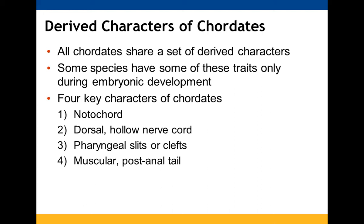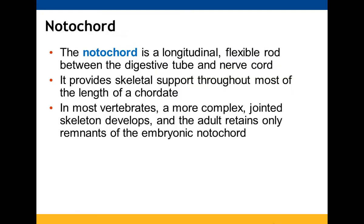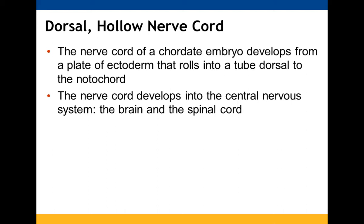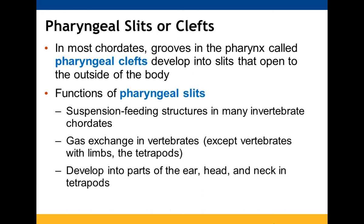The notochord is a flexible rod found in the digestive tissue region, and the nerve cord is able to provide skeletal support. In most vertebrates the notochord becomes reduced, with only remnants present in adults. The dorsal hollow nerve cord in a chordate embryo forms from a plate that rolls into a tube working with the notochord, and this is able to form the central nervous system, including the brain.